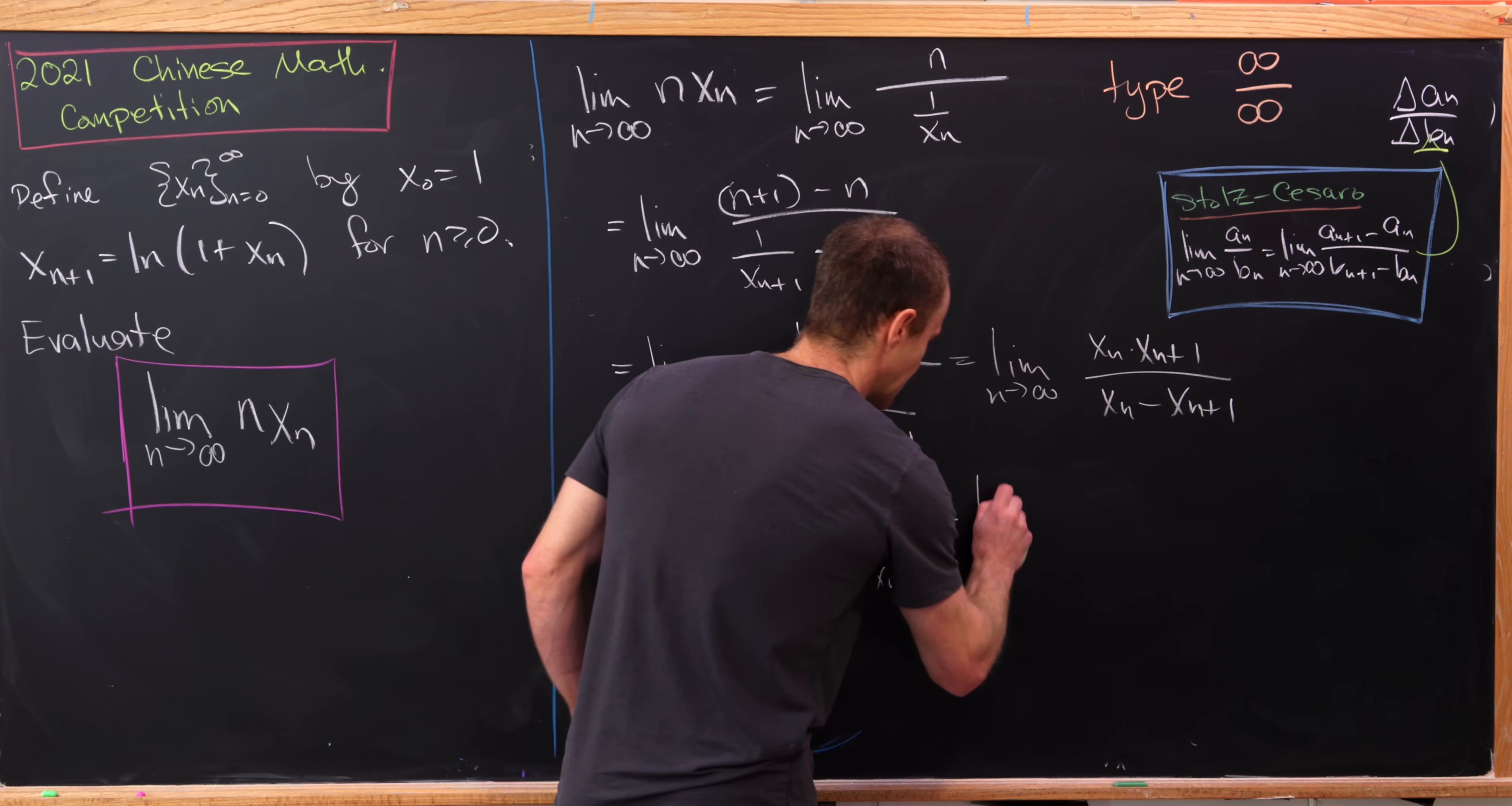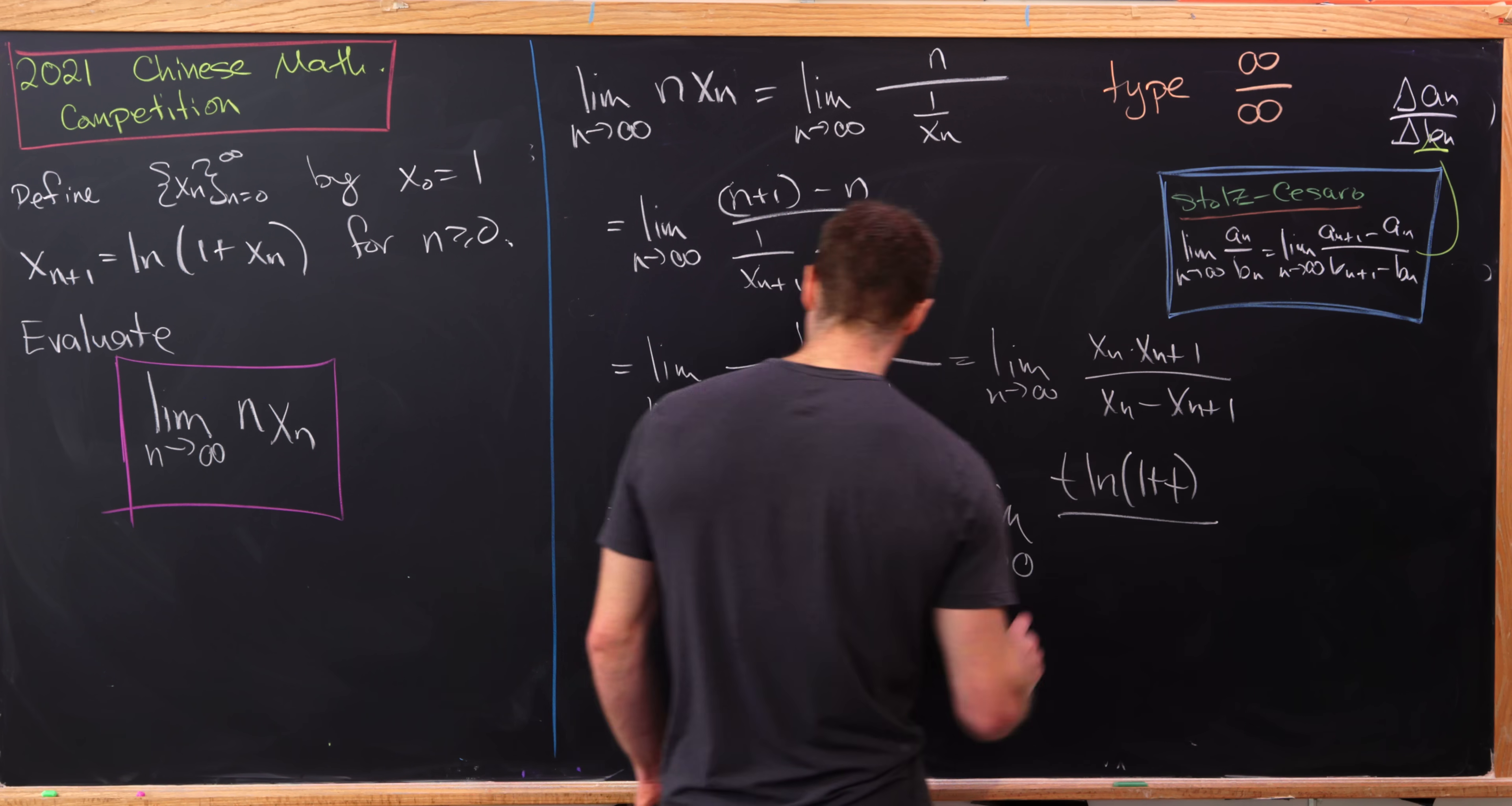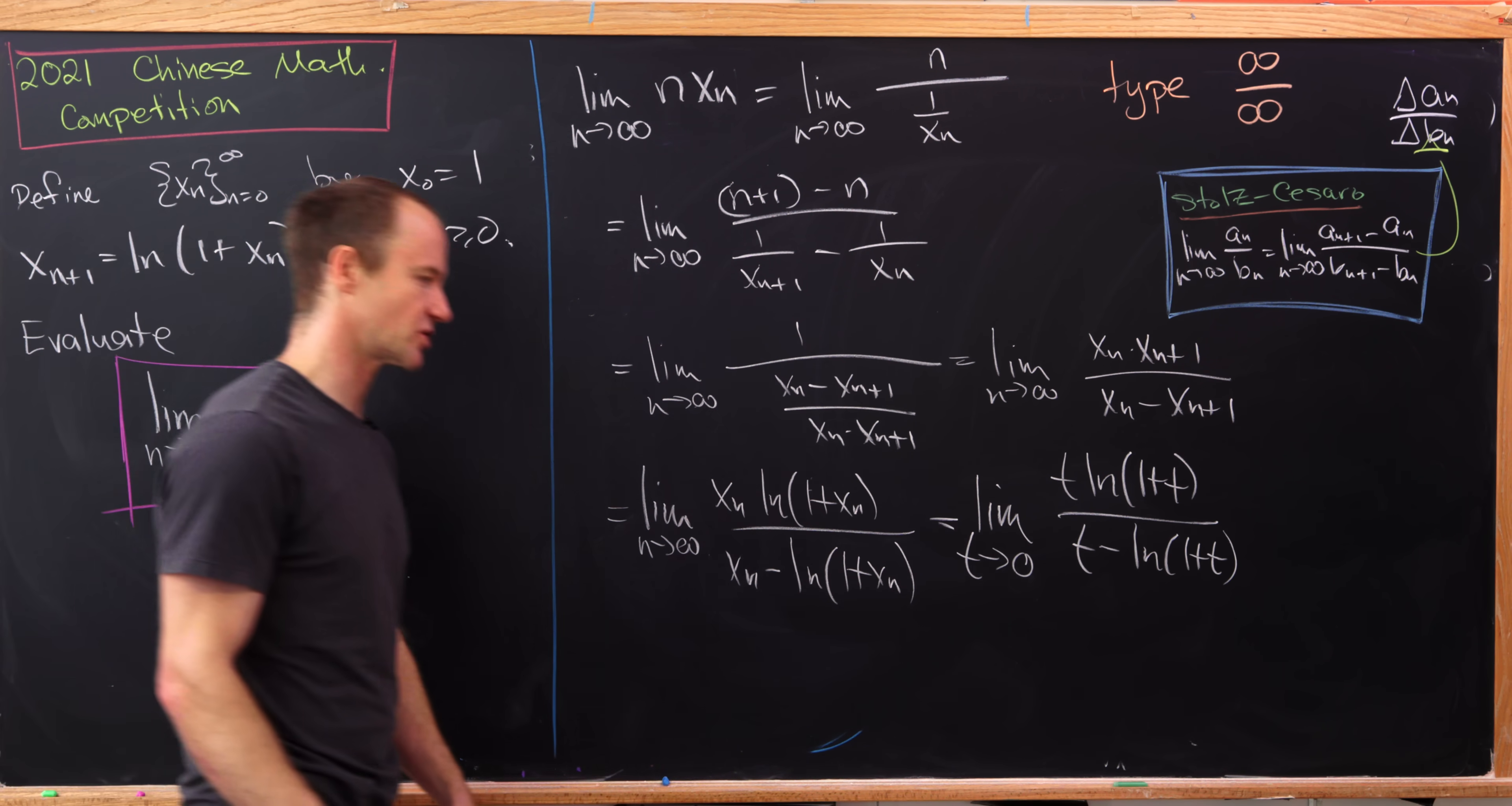So that allows me to rewrite this as the limit as t goes to 0—why to 0? Because that's the limit of our x_n sequence which we proved before—of t times the natural log of 1 plus t over t minus the natural log of 1 plus t. But now if we look at that, that's another indeterminate form of type 0 over 0, which we can use the actual L'Hopital's rule on because we have functions.